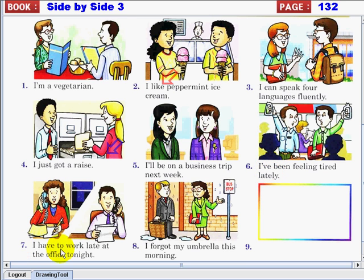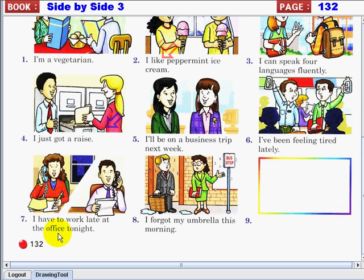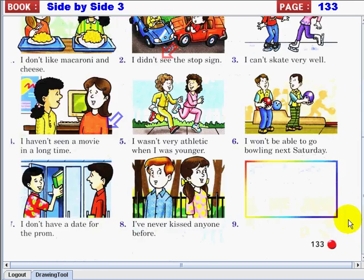Number six, I've been feeling tired lately. So have I. All right, number seven, I have to work late at the office tonight. I have to, or so have I. Number eight, I forgot my umbrella this morning. So did I, or I did too. And for box number nine, you can give your own. Very good and another activity.